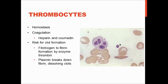When clots do form, fibrinogen turns into fibrin, which forms the actual clot. In order for that to happen, it requires the enzyme thrombin. In order to break down a clot that's no longer needed, an enzyme called plasmin is used that breaks down the fibrin and dissolves the clot.